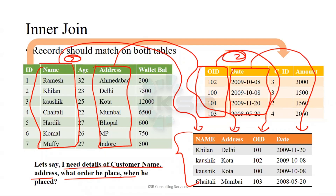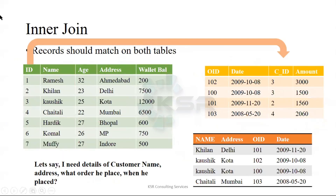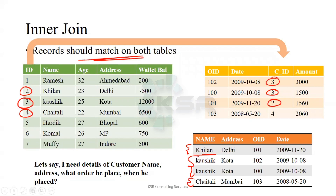My requirement of getting two columns from one table and two columns from the other table is satisfied in the orange table — the orange table is my final result. Now come up with the definition: records should match on both tables. Here, two was matching with two, so I got that result — that is Kilon. Three was matching with three, so I got Kaushik — I got him two times because he has purchased two times. And four is Chaitali. Only matched records will come. Wherever the matching records are, only that information will come.